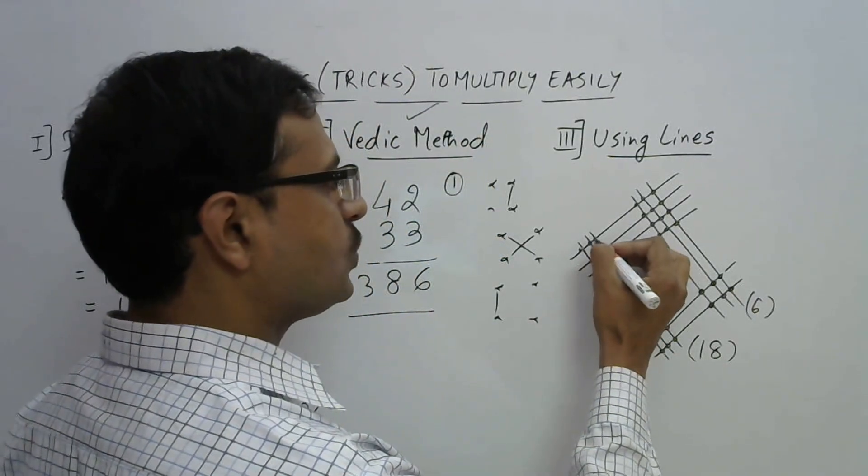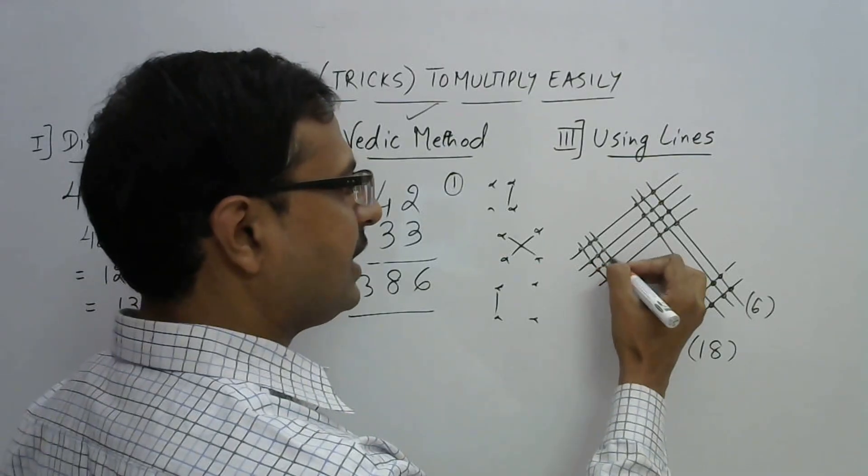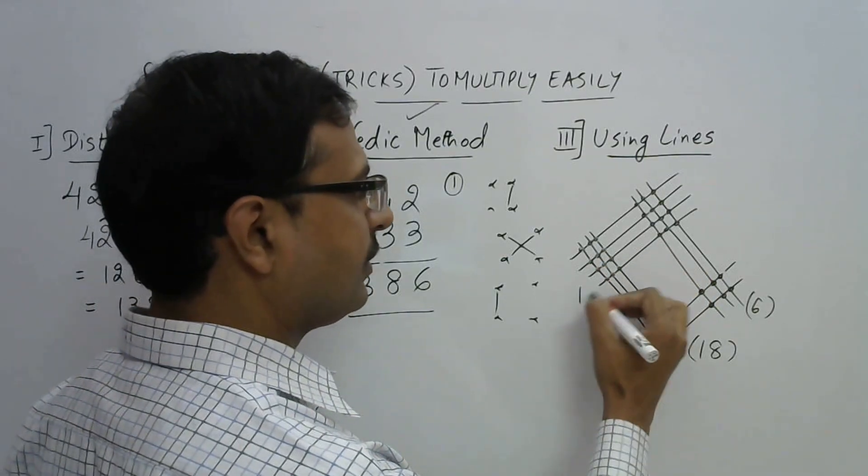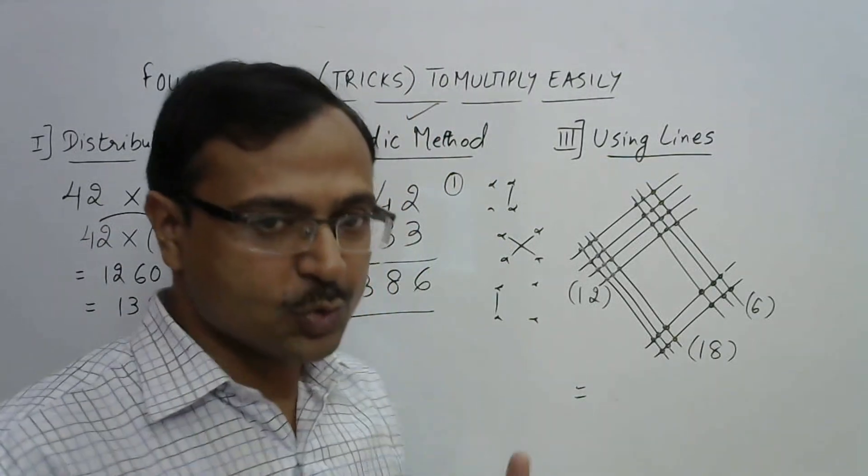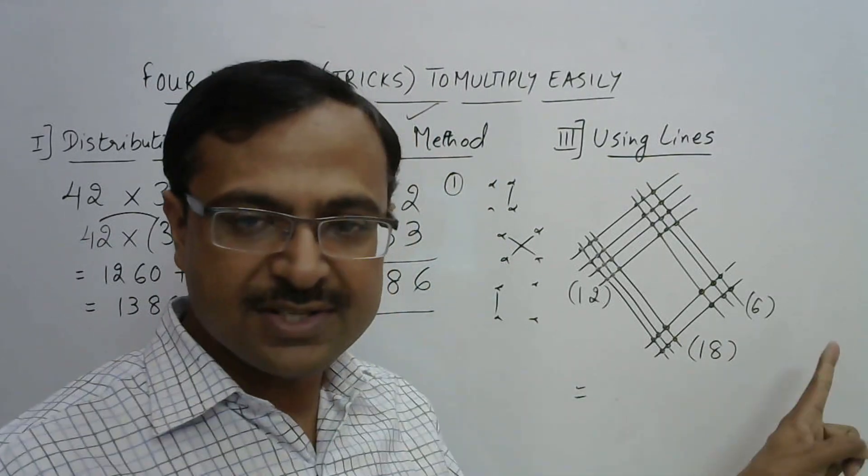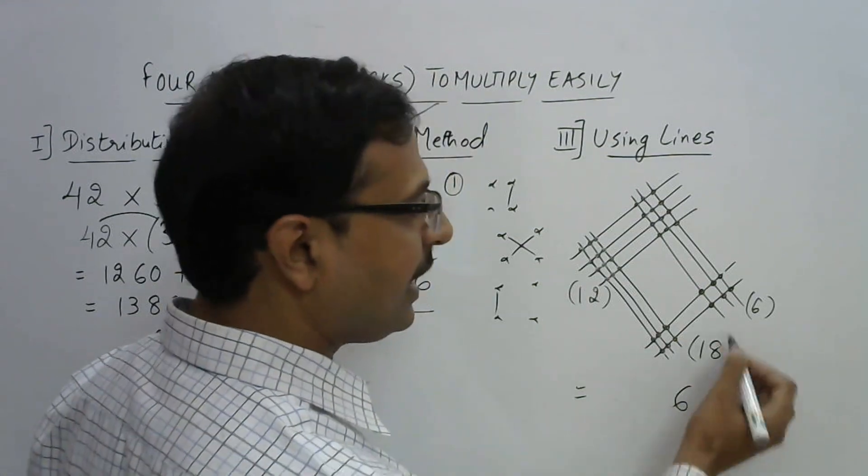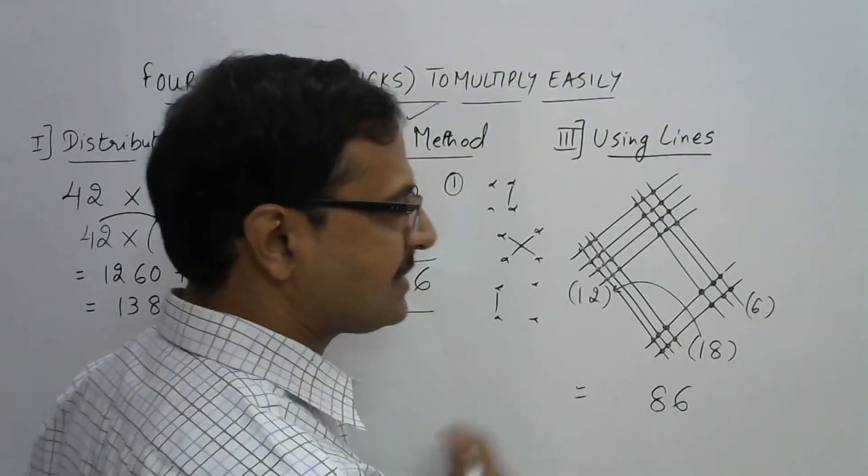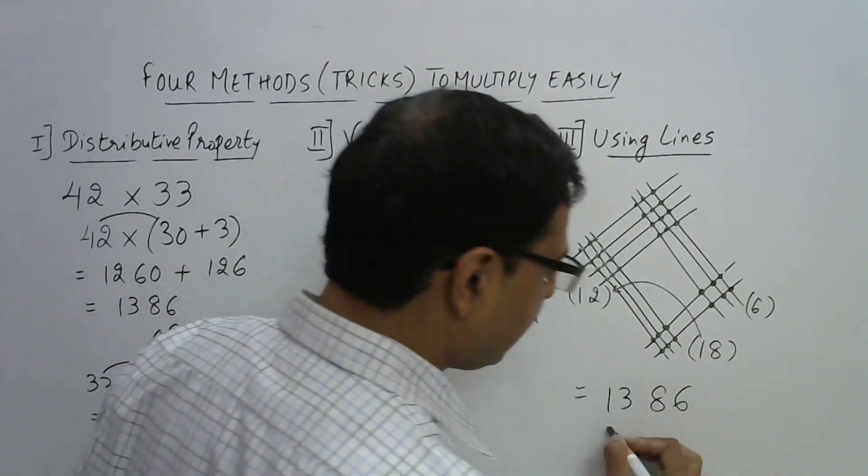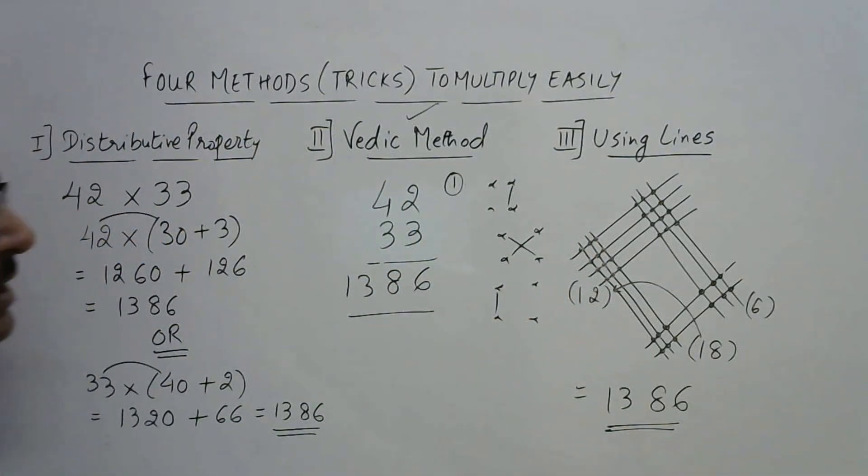And now count here 1, 2, 3, 4, 5, 6, 7, 8, 9, 10, 11, 12. Now what do we do here? Again the carry forward system is to be used. See here we have a single digit 6. So 6 will come here. 18 will have 8 here and this 1 will get carried forward to the next step. So 12 plus 1, 13. Again the same answer 1, 3, 8, 6.